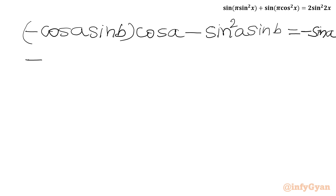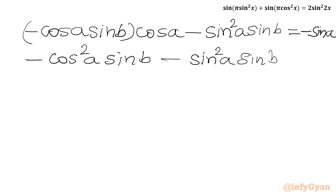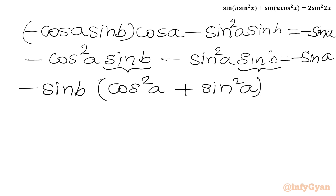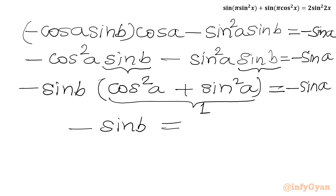Now I can simplify. Writing minus cos²a times sin b minus sin²a times sin b equals minus sin a. Sin b is common from both terms on the left, so taking minus sin b common gives minus sin b times (cos²a plus sin²a) equals minus sin a. By the trig identity cos²θ plus sin²θ equals 1, this simplifies to minus sin b equals minus sin a. Multiplying by minus 1, we get sin a equals sin b.